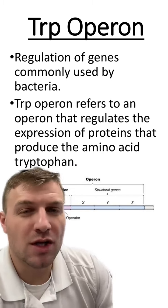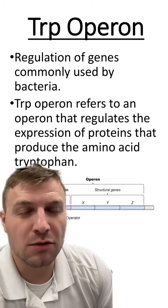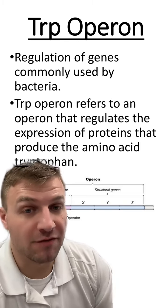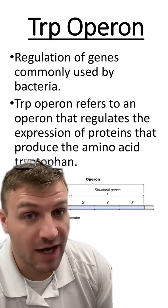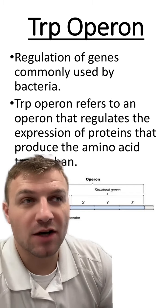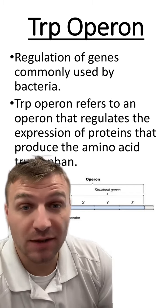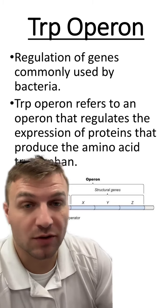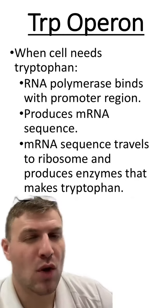The trp operon refers to the operon that makes tryptophan, which is an amino acid. Remember that amino acids make up proteins, so having these amino acids is essential for protein synthesis.